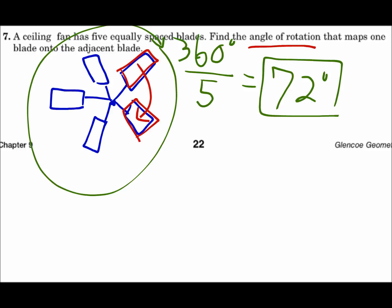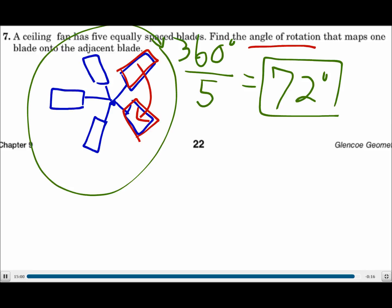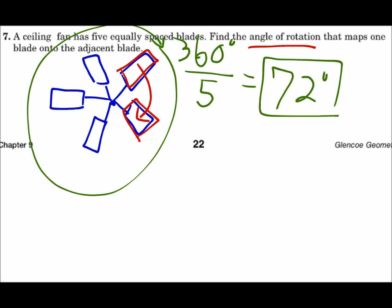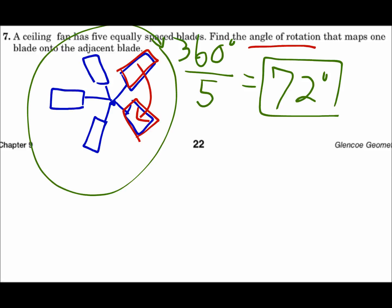Remember: when you rotate, rotate about the center, move each point using that same center, and then connect the dots. Your image should look congruent to the pre-image — it's just turned around. If it looks like the shape changed, maybe it got smaller or opened up wider, double-check your new points because you might have made a mistake. Rotate each point, then connect the dots.